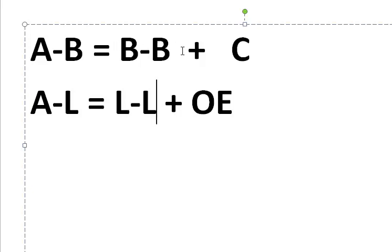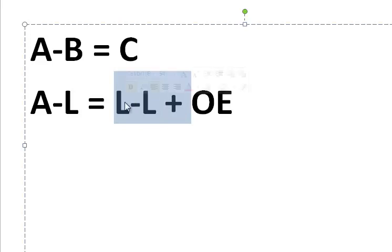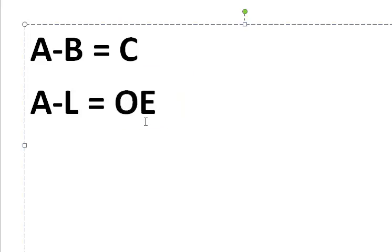and the same we get B minus B is zero, so all of that goes. And we get owner's equity equals assets minus liabilities.